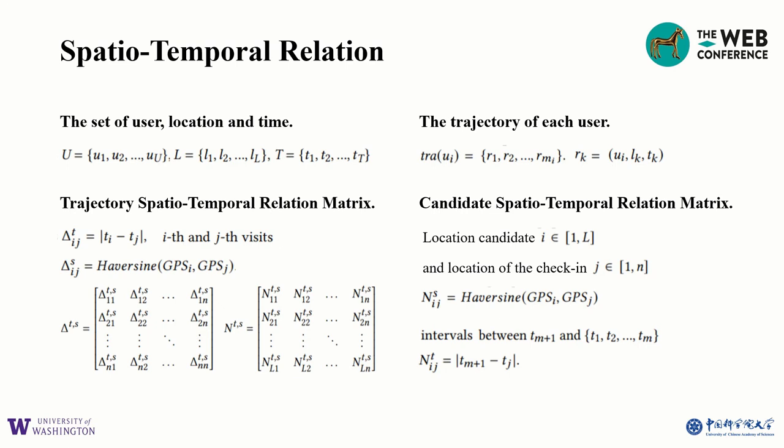Let's quickly review the problem description of POI recommendation. The trajectory data we have is a sequence with each element containing user ID, location ID, and exact time. We construct two spatiotemporal relation matrices. The trajectory spatiotemporal relation matrix stores the relative spatial and temporal differences between any two visits within the trajectory. The candidate spatiotemporal relation matrix stores the relative spatial and temporal differences between each visit in the trajectory and each potential visit in the location set. The first matrix is used for representation learning, and the second matrix is used for next location matching.